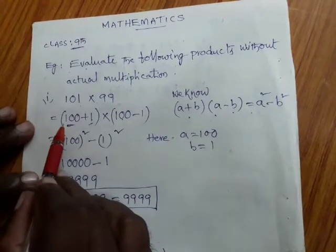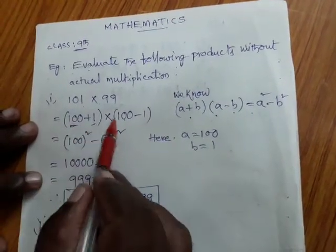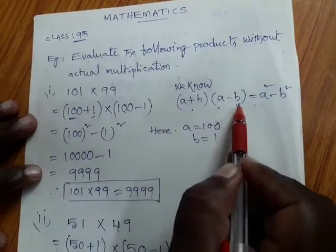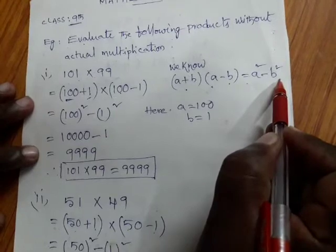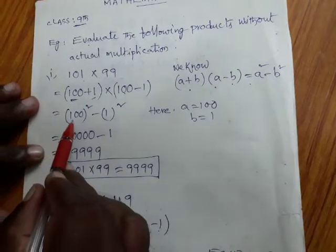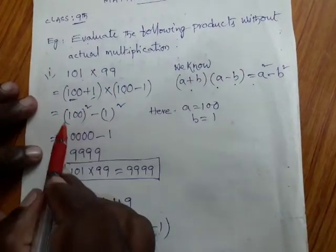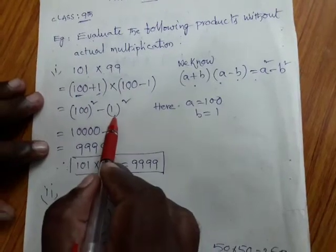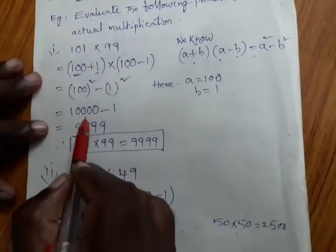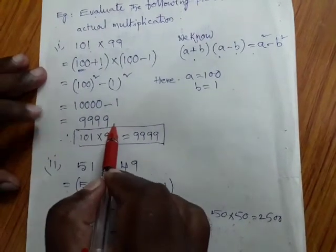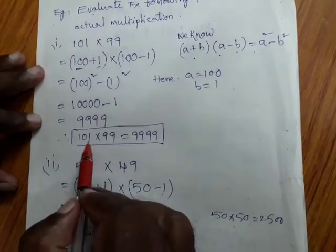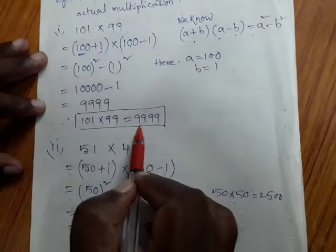Now it is of the form A plus B into A minus B. A plus B into A minus B is equal to A square minus B square. We have to use this identity. Solve it. 100 square, A square, minus B means 1, 1 square. 100 square means 10,000. 10,000 minus 1. 9,999. Therefore 101 into 99 equals 9,999.